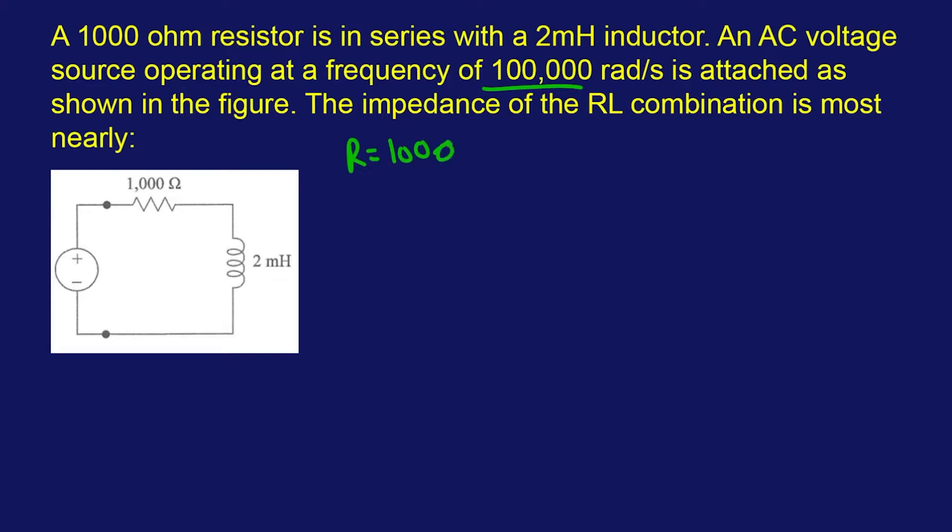Unfortunately for inductors and capacitors and those weird electrical components, they have something fundamentally different when it comes to impedance. For the inductor, the impedance is going to be jωL.